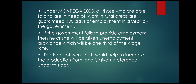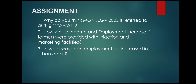If the government fails to provide employment, the person will be given an unemployment allowance which is one-third of the wage rate. The type of work given preference under this act is that which helps increase production from land. MGNREGA provides short-term employment to individuals who are willing to work but do not have any other work to do.